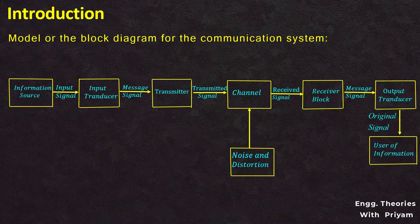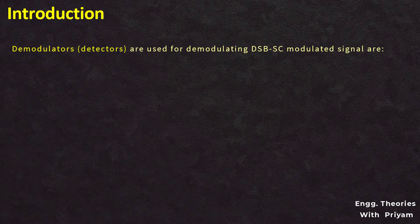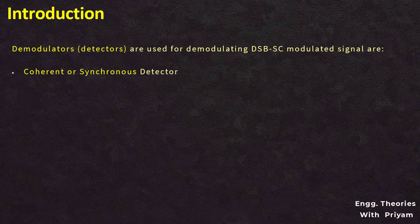At the receiver end, the message signal is recovered from the received DSBSC signal. The process of extracting the original message signal from the DSBSC modulated signal is known as detection or demodulation of the DSBSC modulated signal. The following detectors can be used for demodulation: coherent or synchronous detector, and Costas loop receiver. Let's see how the DSBSC demodulation is performed using the coherent or synchronous detector.